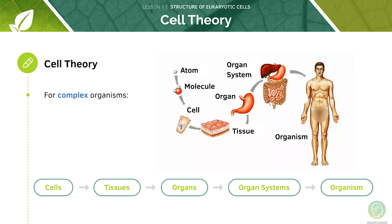For more complex organisms such as humans, we can use this flow diagram. We start off with cells making up tissues, and these tissues will make up organs. Organs will make up organ systems, which finally make up the organism.